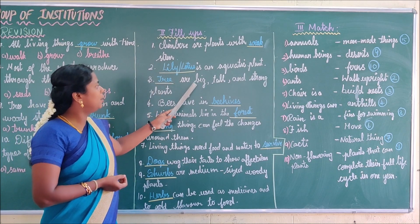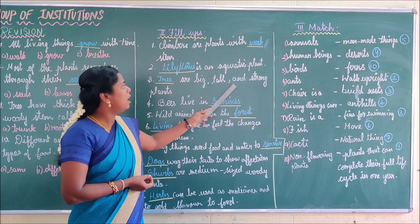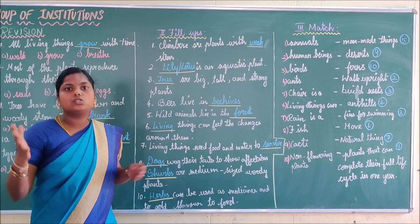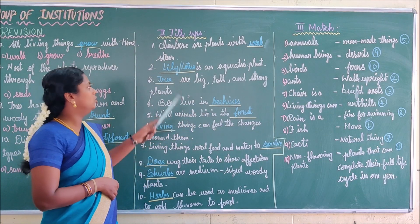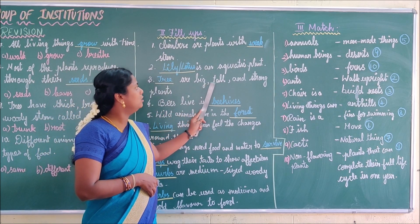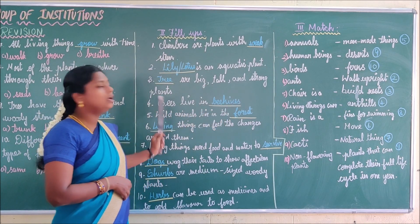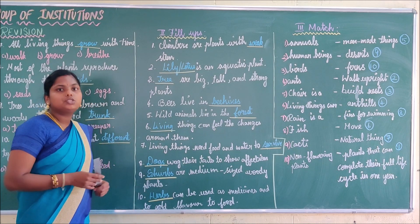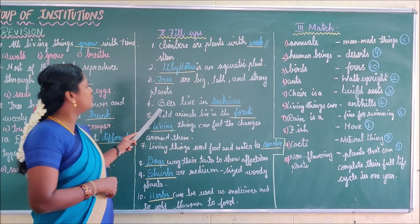Next fill-up: Blank are big, tall and strong plants. Which plants are big, strong and tall? Trees are the big, tall and strong plants.